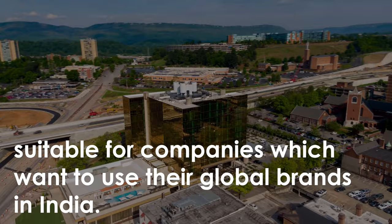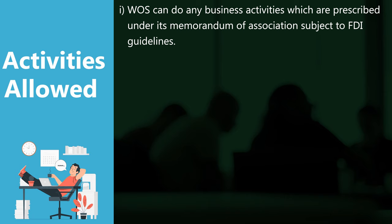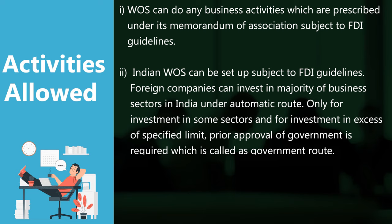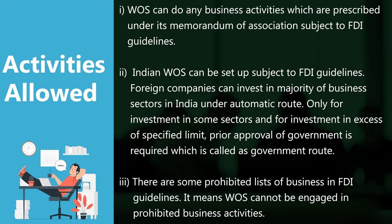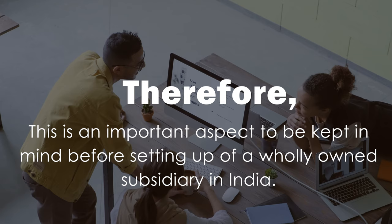Activities allowed: First, WOS can do any business activities prescribed under its memorandum of association, subject to FDI guidelines. Second, Indian WOS can be set up subject to FDI guidelines. Foreign companies can invest in the majority of business sectors in India under the automatic route. Only for investment in some sectors and for investment in excess of a specified limit, prior approval of the government is required, which is called the government route. Third, there are some prohibited lists of business in FDI guidelines, meaning WOS cannot be engaged in prohibited business activities. This is an important aspect to keep in mind before setting up a wholly owned subsidiary in India.